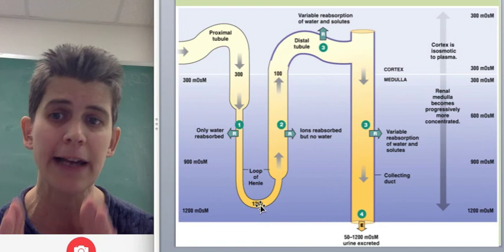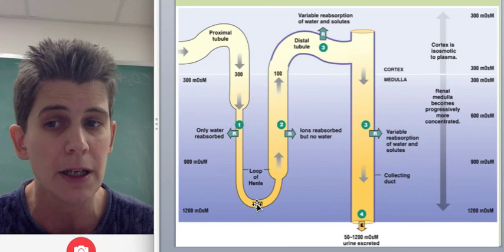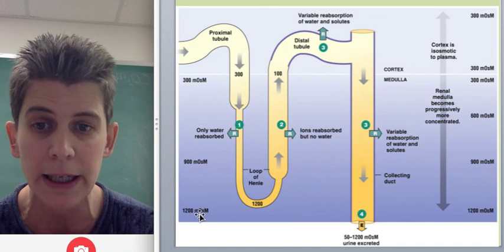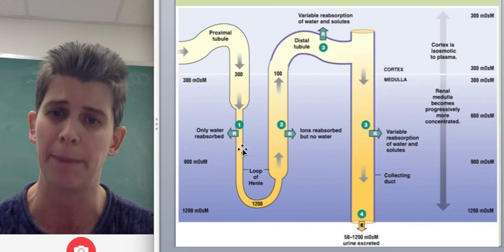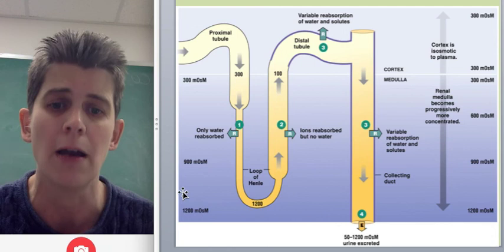So that's how the loop of Henle forms a concentrated fluid here. The other thing to keep in mind, the last thing, is that it's not just concentrated here, but concentrated in the interstitial fluid surrounding it, because those ions get pumped out and they stay there, some of them, but the water is being reabsorbed into those capillaries around it. So we have not only created a concentrated fluid in the loop of Henle, but also around it. To see why that matters, watch the next video about concentrating urine.